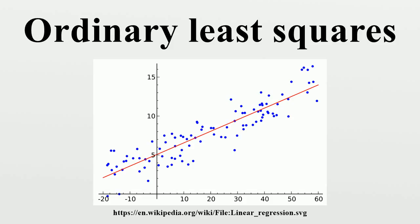Under these conditions, the method of OLS provides minimum variance mean unbiased estimation when the errors have finite variances. Under the additional assumption that the errors be normally distributed, OLS is the maximum likelihood estimator.